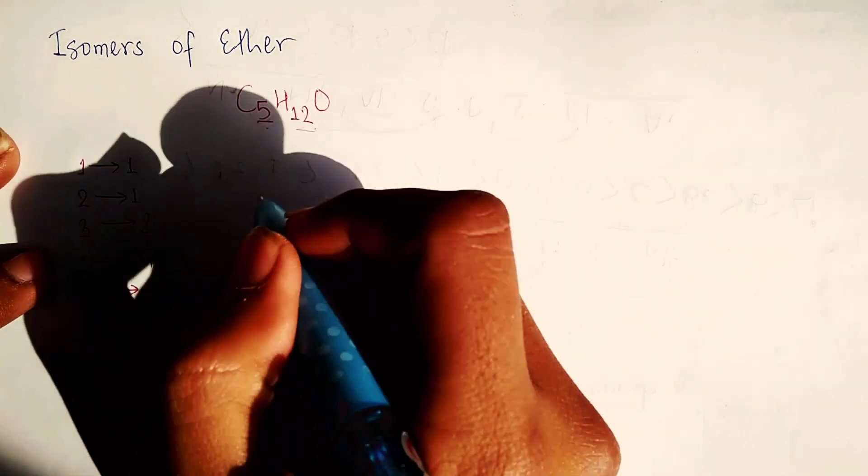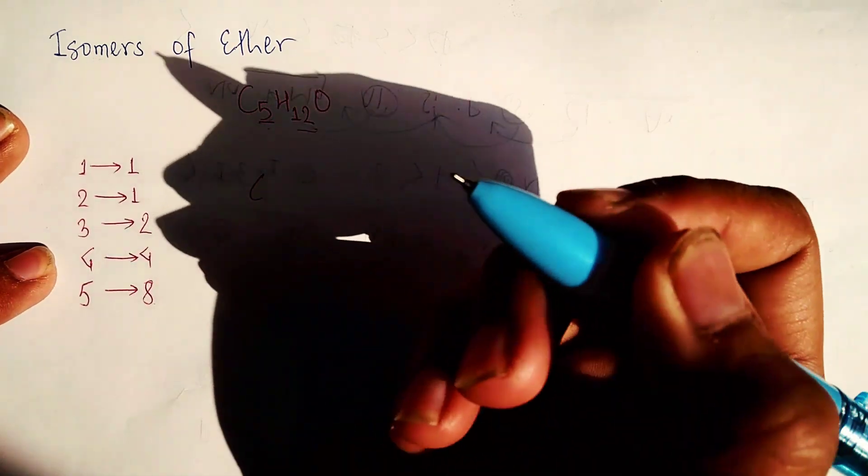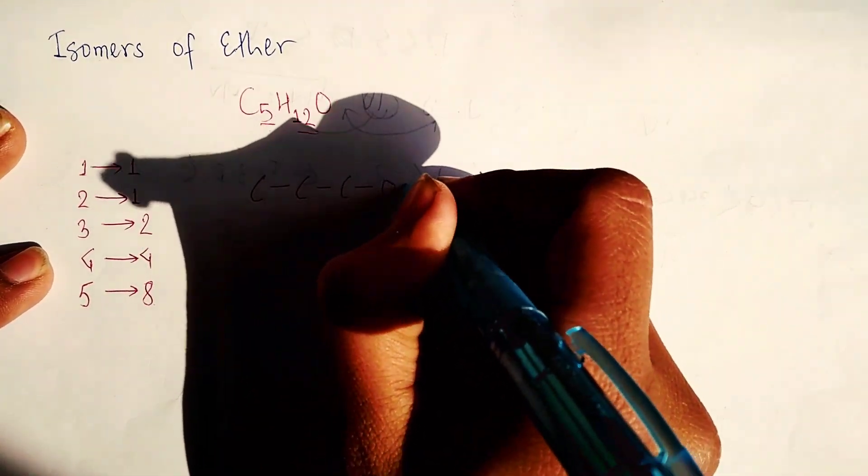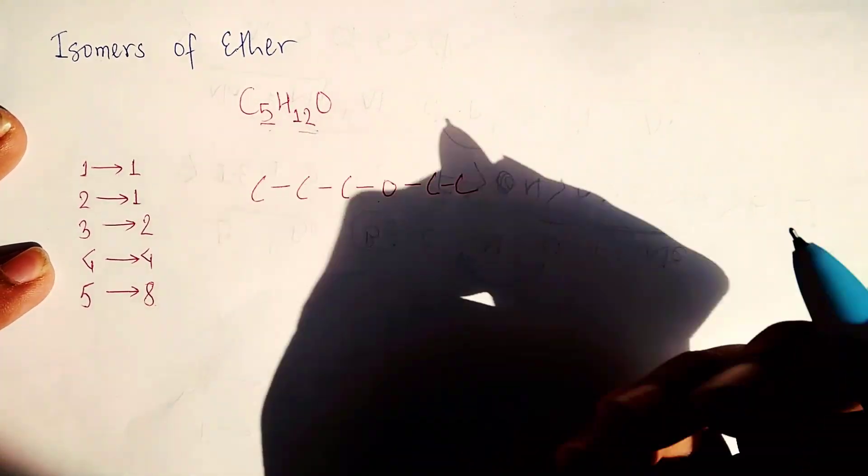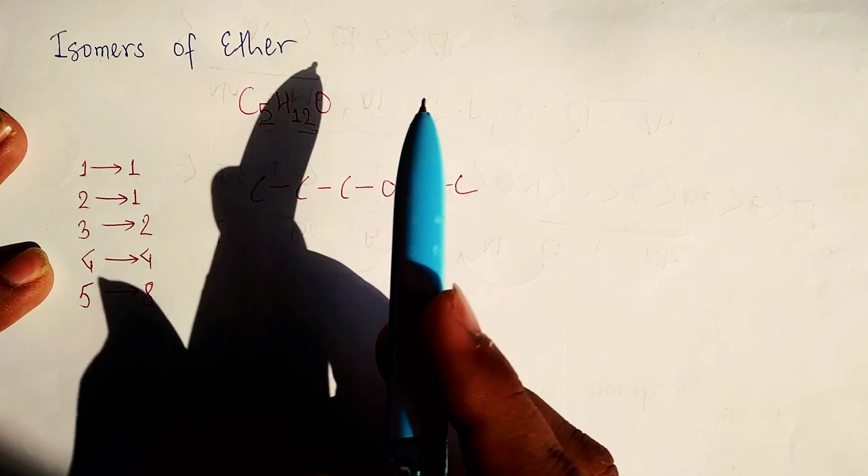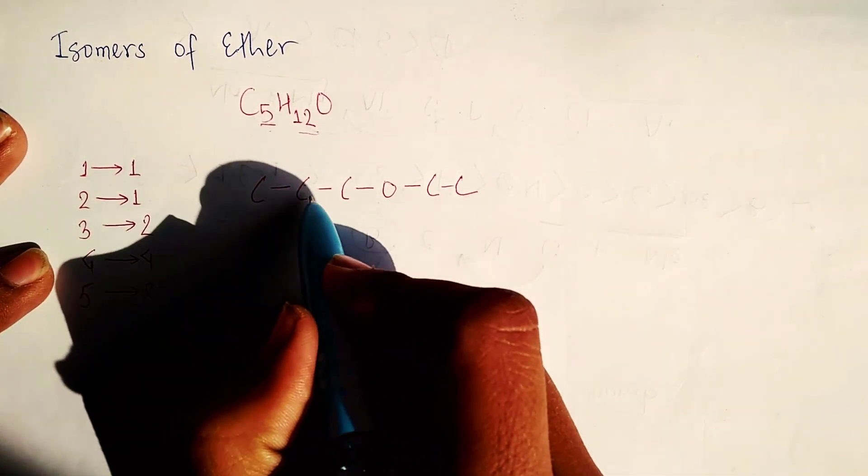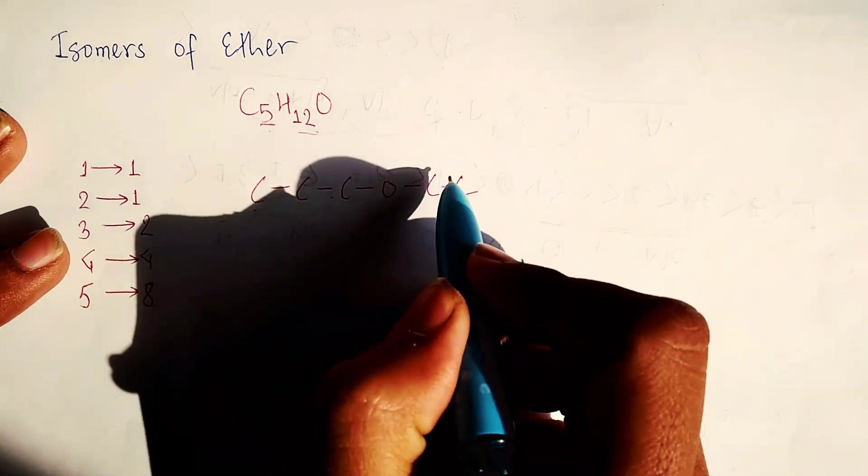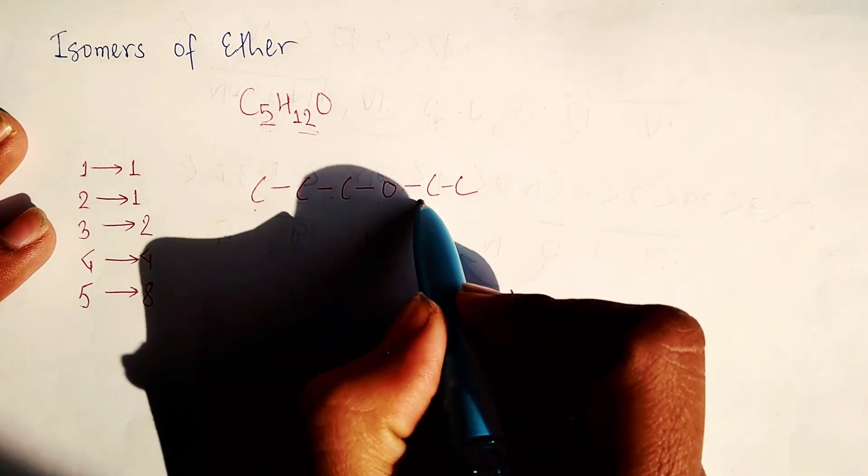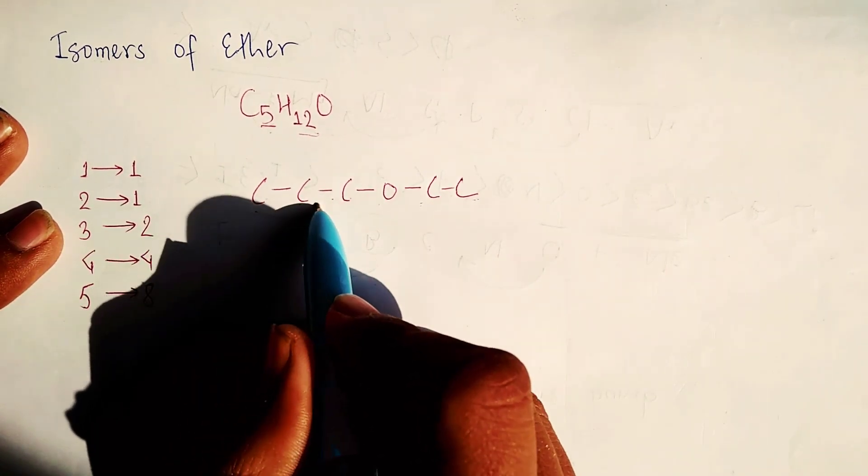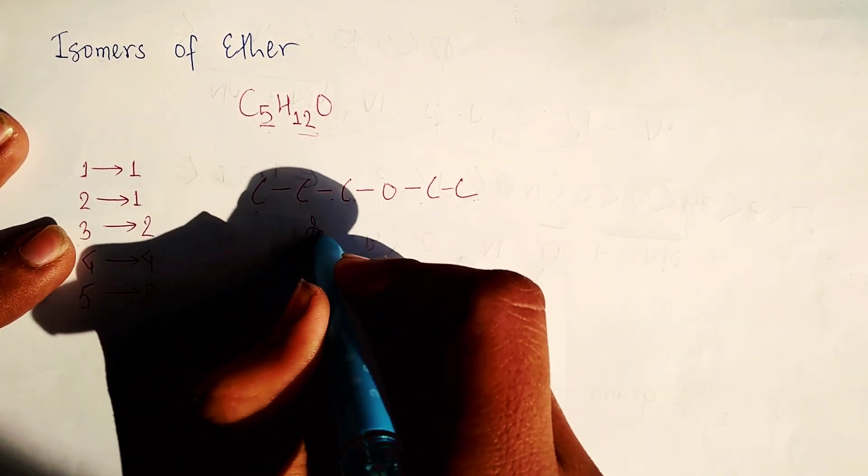First we have to separate it into ether form. Take any example: 1, 2, 3, O, 1, 2 - this may be the structure of this ether. Now we will take 1, 2, 3 before oxygen - the higher value. We cannot take 2 because it is smaller than 3, so we will take 1, 2, 3. Then we will take 2.